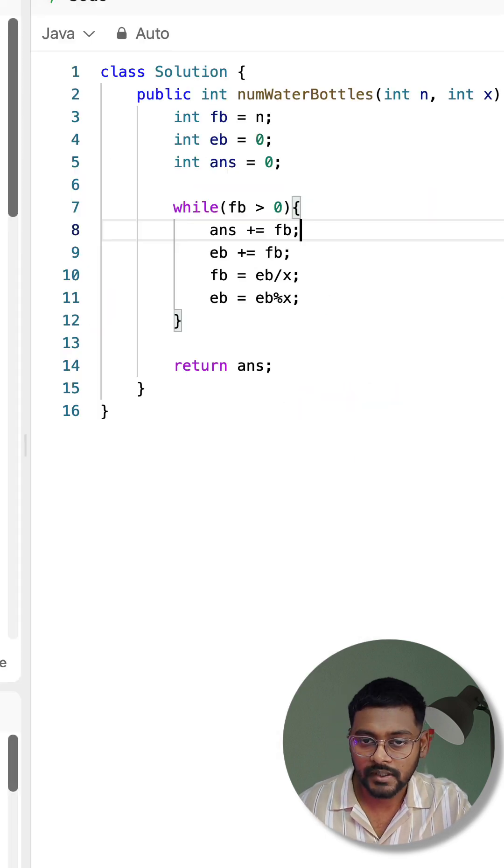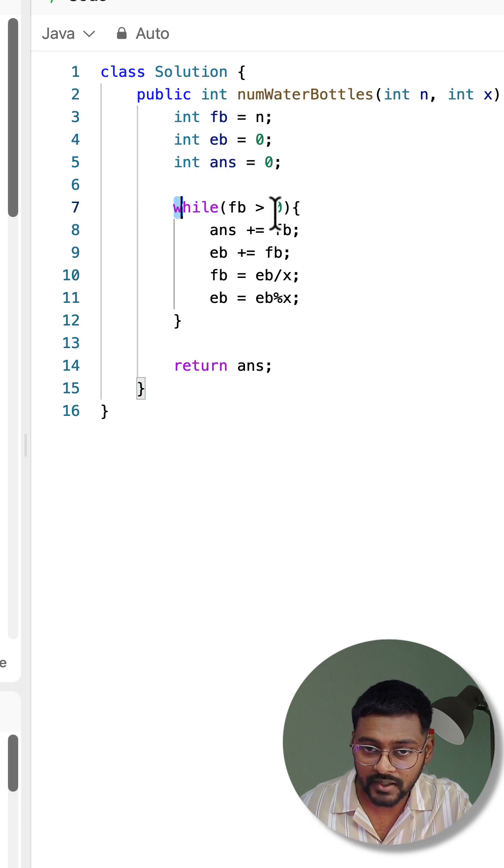Let me show you the code. Here I have done the same thing. Number of filled bottles, empty bottles, and answer. And while the filled bottles is greater than 0, just capture it to the answer and see how many exchanges we can make to get one number of filled bottles. That's all.